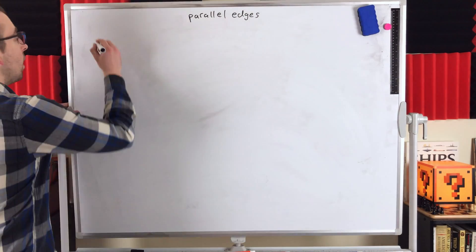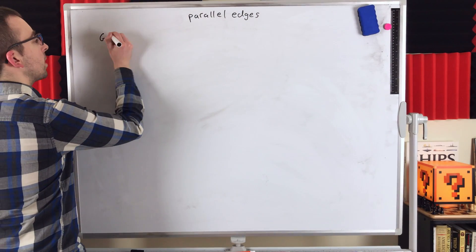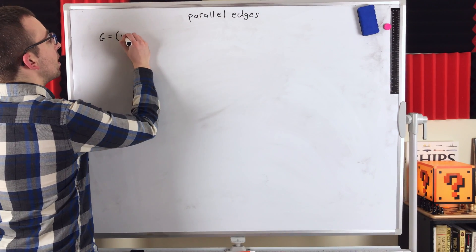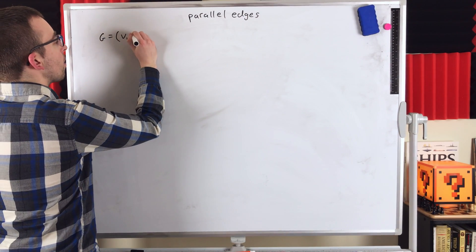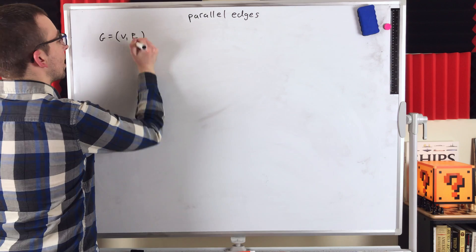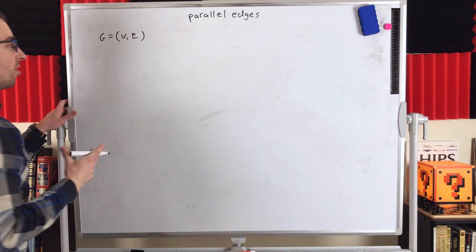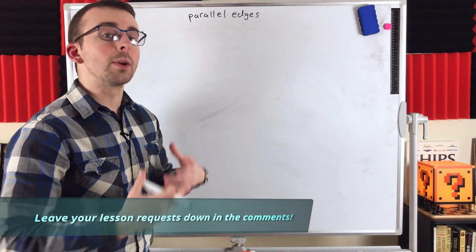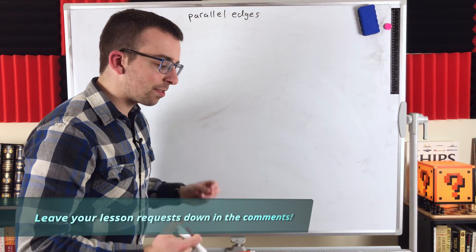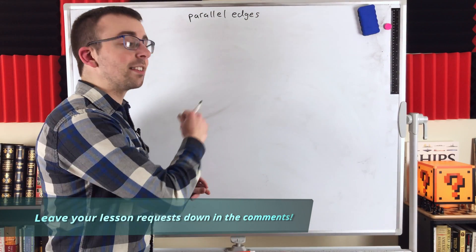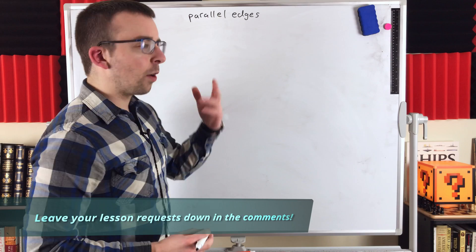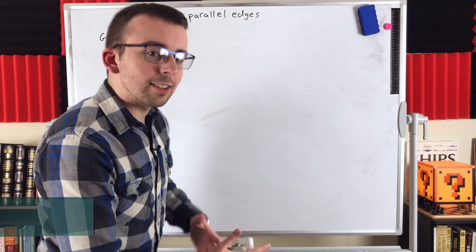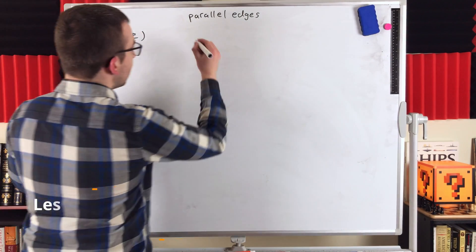I'm sure we're all familiar with the fact that a graph is an ordered pair with a vertex set and an edge set. We're starting here with simple graphs, and then we can see how we have to introduce some differences to talk about parallel edges.